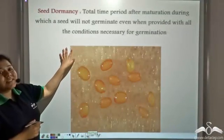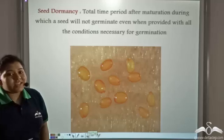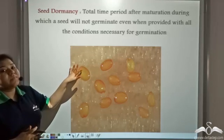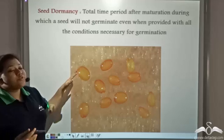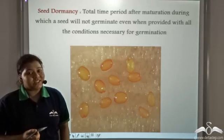Seed dormancy is the total time period after maturation during which a seed will not germinate even if provided with all the conditions necessary for germination.